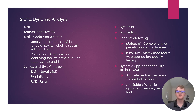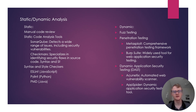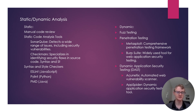For static analysis, it's basically analysis that's already done before the code gets started. Manual code review is self-explanatory — it's just going back over the code. Some static code analysis tools include SonarQube, which detects a wide range of issues including security vulnerabilities, and Checkmarx, which specializes in identifying security flaws.